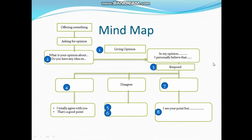Answer number 4: the clue given is 'I totally agree with' and the answer is 'agree.' For answers number 5 and 6, which are answers from disagree, the answers provided are 'I don't agree with you' for number 5, and 'I am afraid I disagree' for answer number 6. Answer number 7 is partly agree — partly agreeing and partly disagreeing. The last answer, number 8, is 'I do agree with you to an extent, however.'